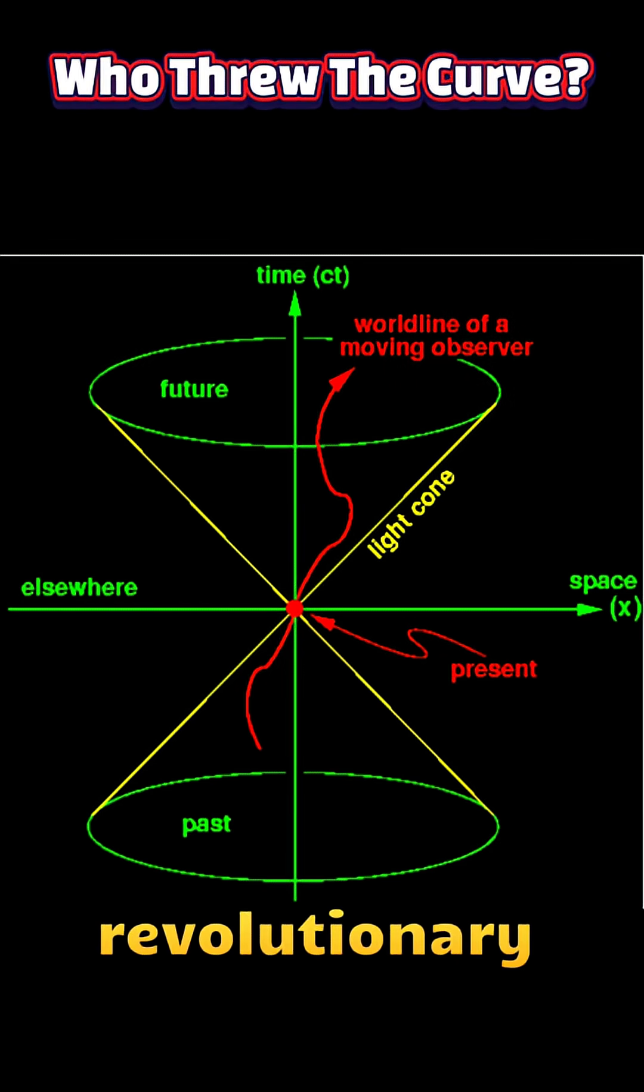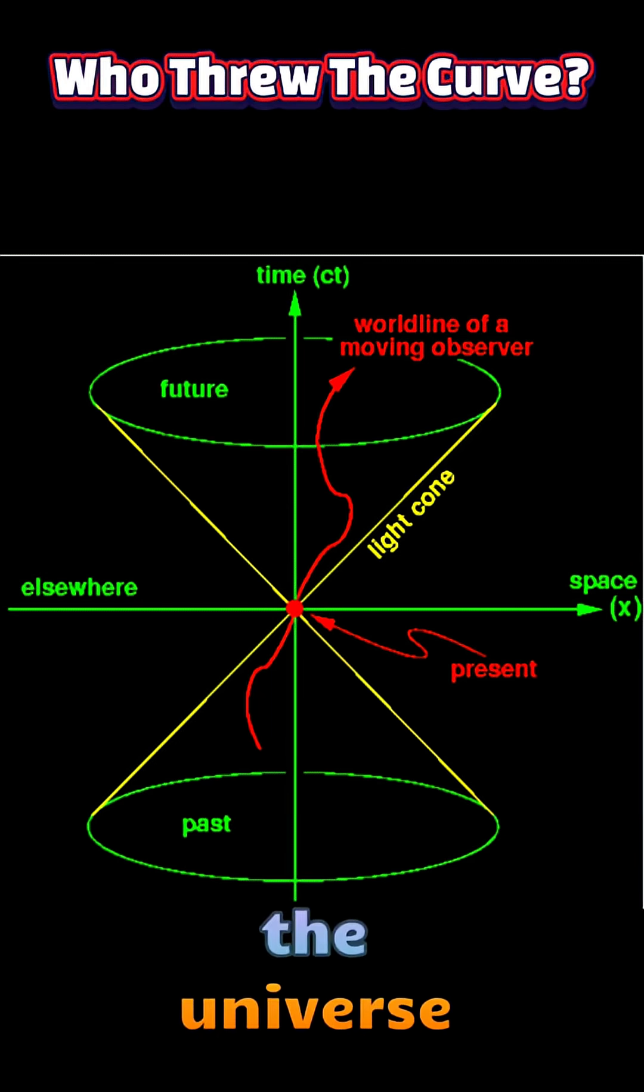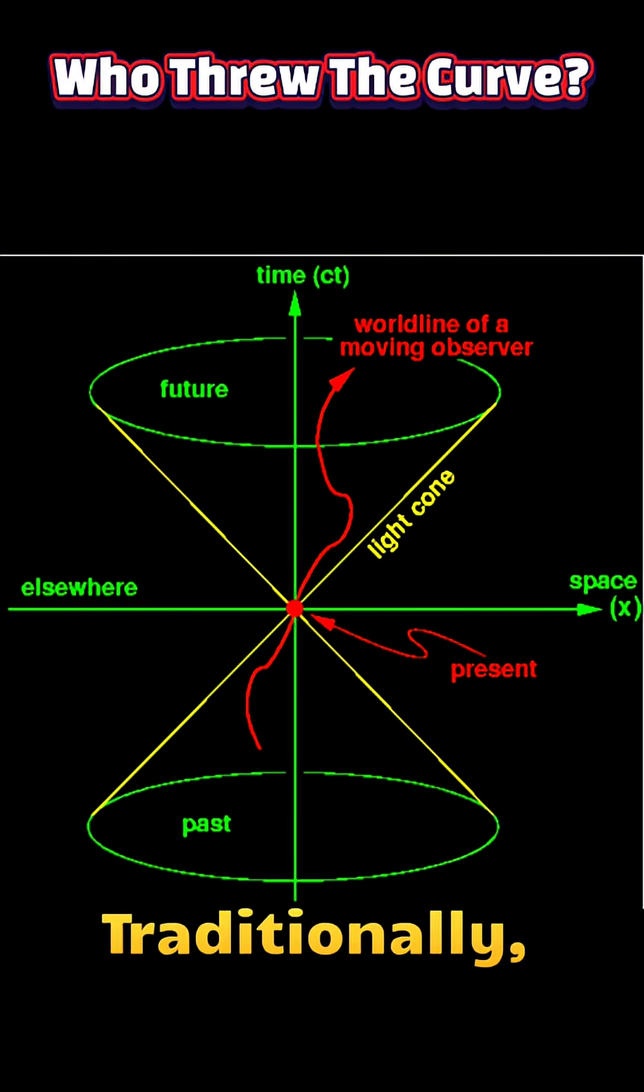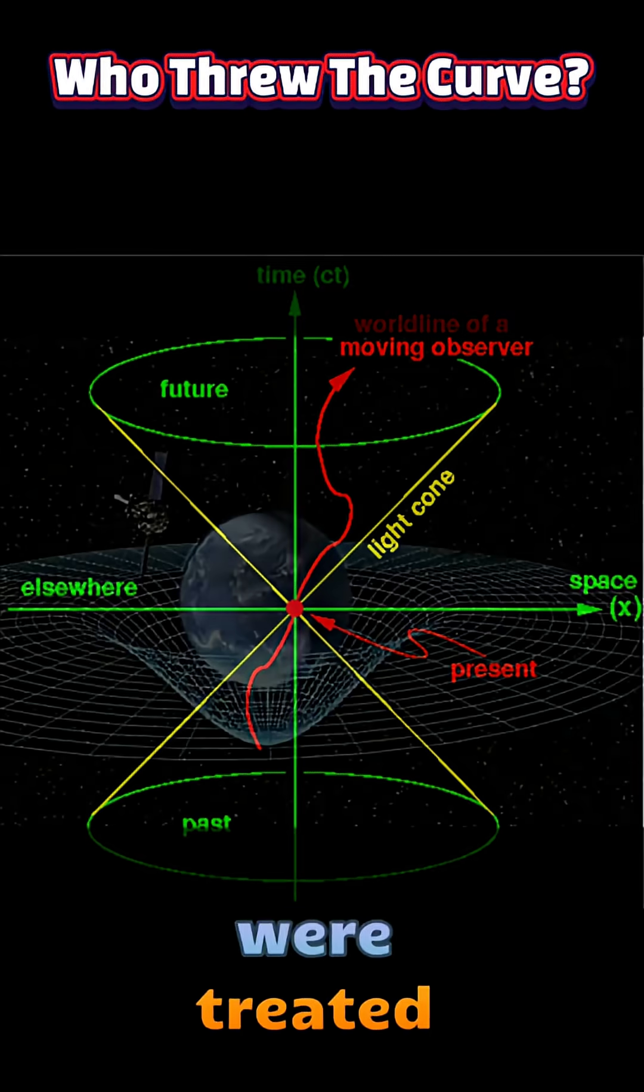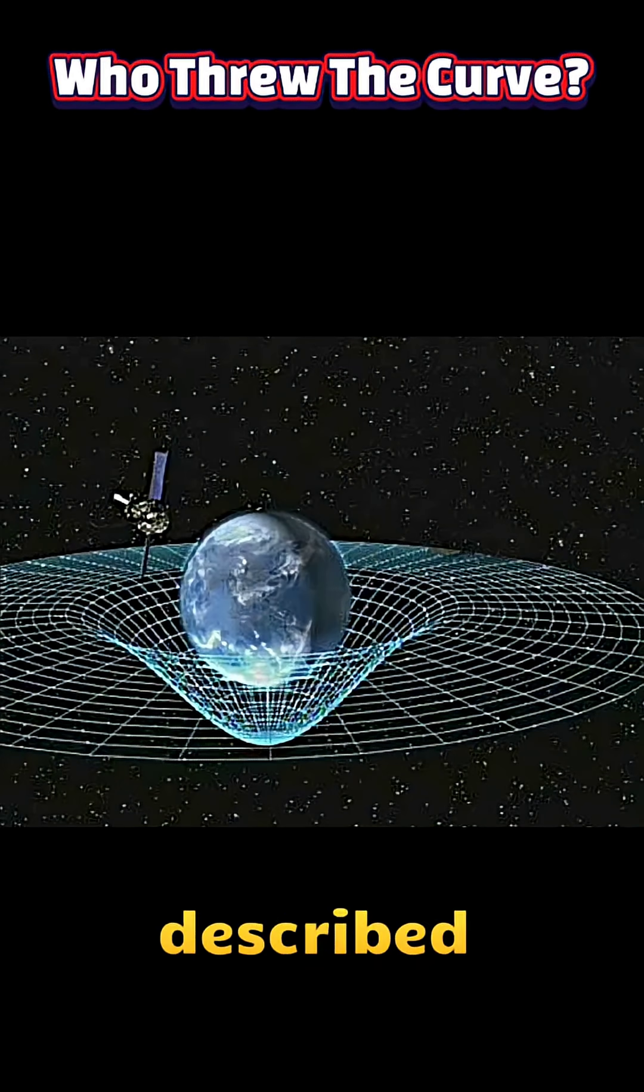Space-time is one of the most revolutionary ideas in modern physics, reshaping how we understand the universe at its most fundamental level. Traditionally, space and time were treated as separate entities. Space described where events occurred, and time described when they happened.